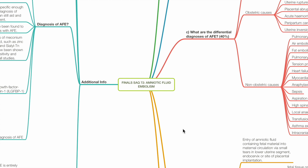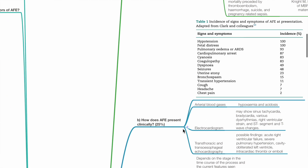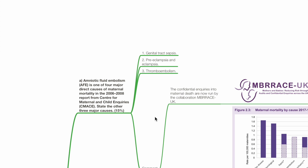Finals SAQ 72 - Amniotic Fluid Embolism. Part A: Amniotic Fluid Embolism is one of the four major direct causes of maternal mortality in the 2006-2008 report from the Centre of Maternal and Child Enquiries. State the other three major causes.